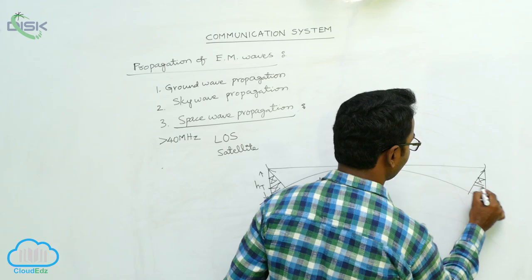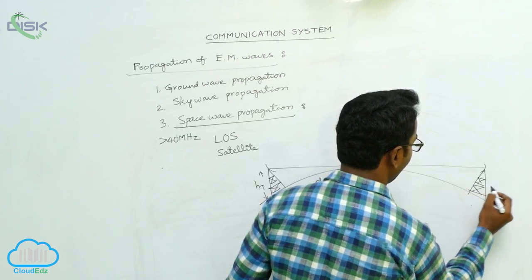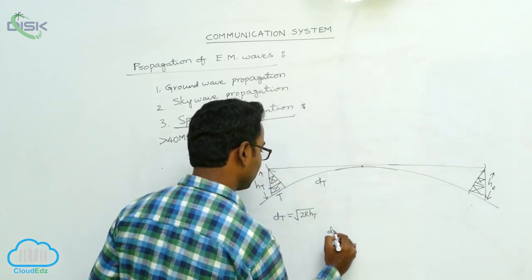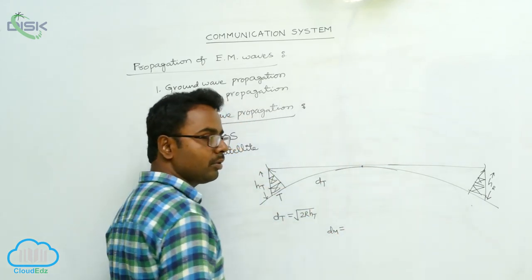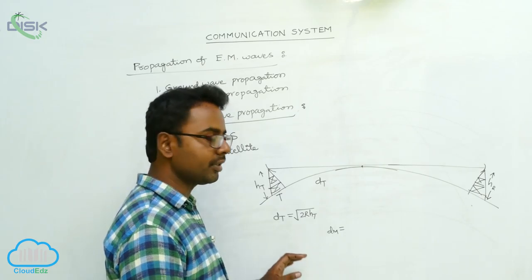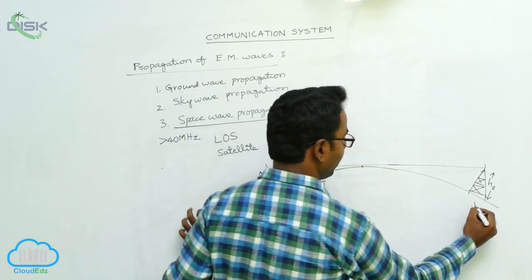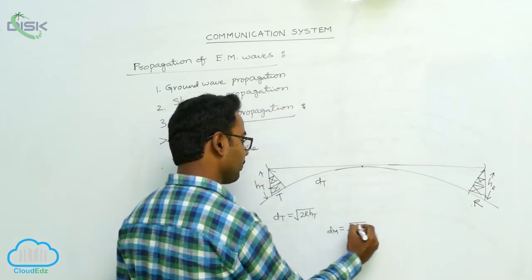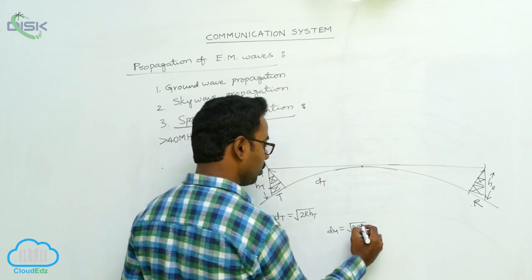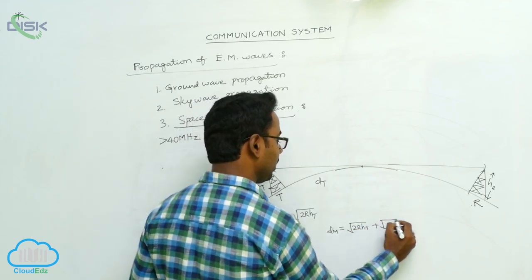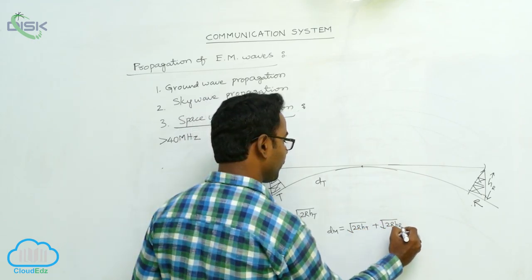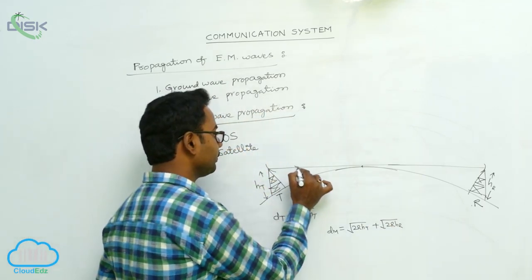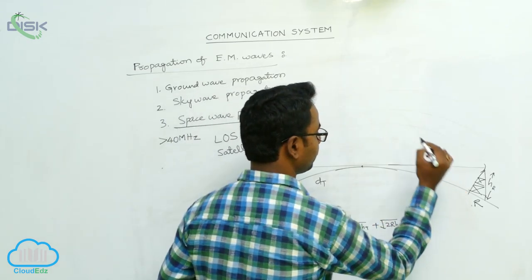Suppose the height of the receiving antenna is HR. Then the maximum line-of-sight distance between the transmitting antenna and the receiving antenna through which the signal is received is given by the formula: dm = √(2R · HT) + √(2R · HR).